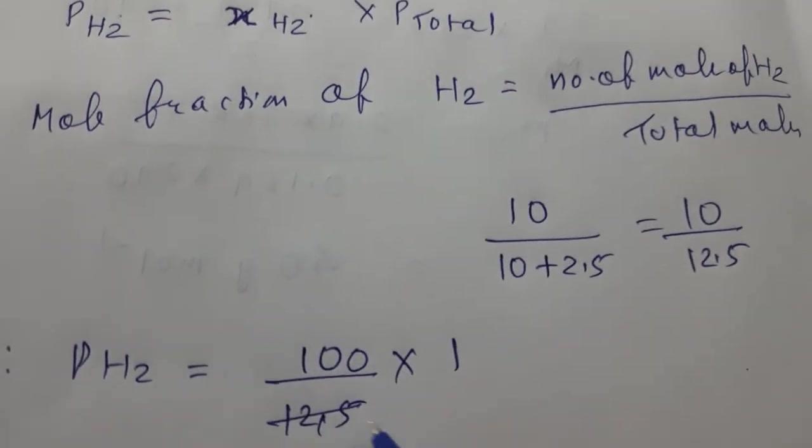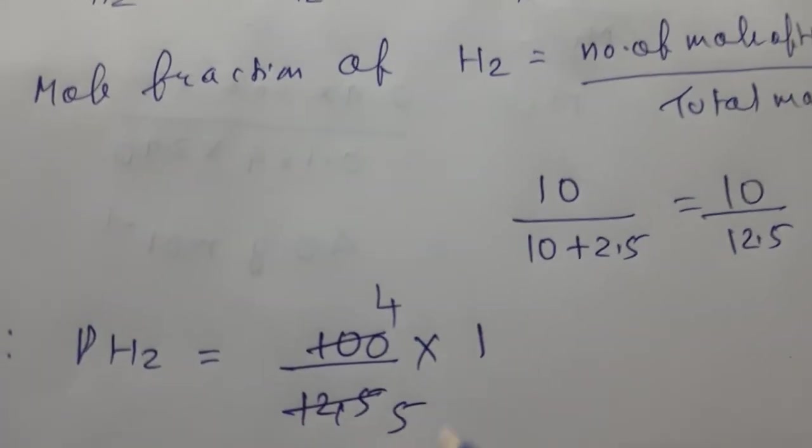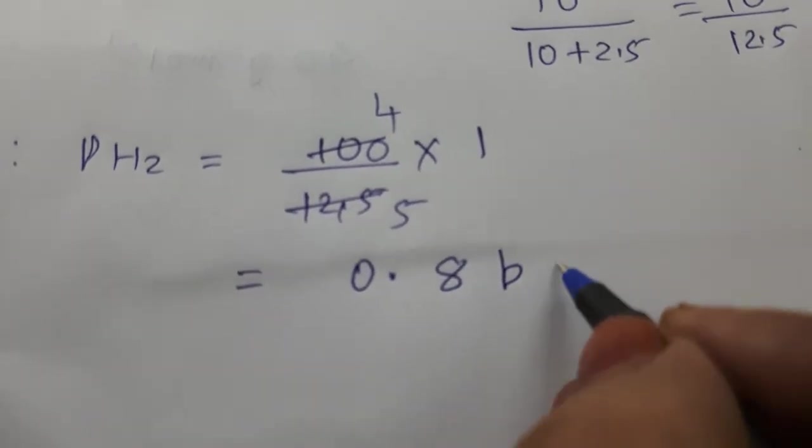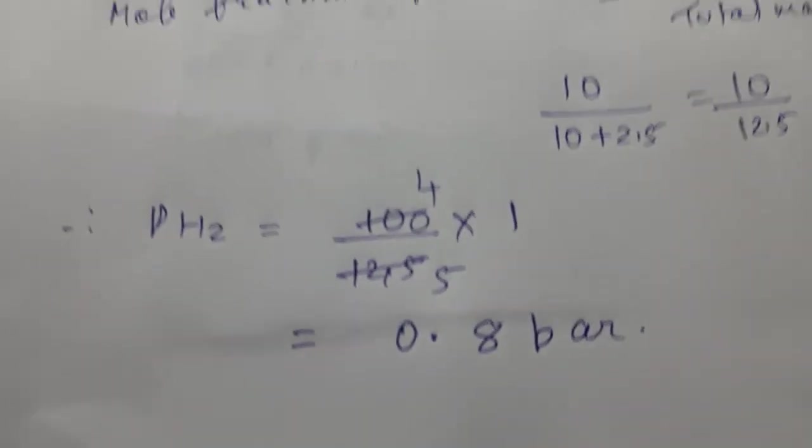So 10 divided by 12.5 will give us 0.8 bar. This is our partial pressure. You understood?